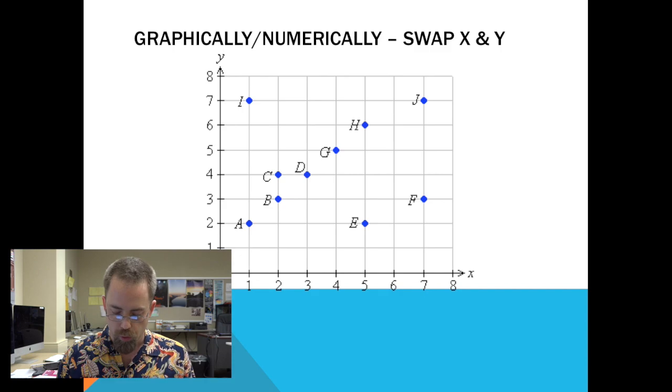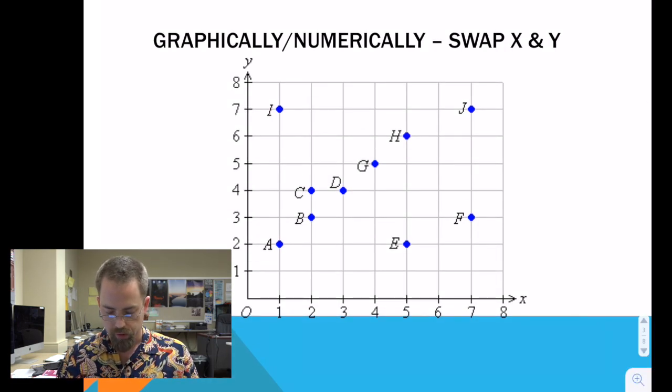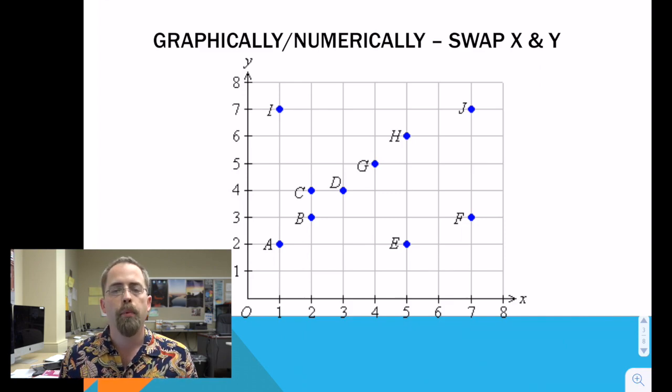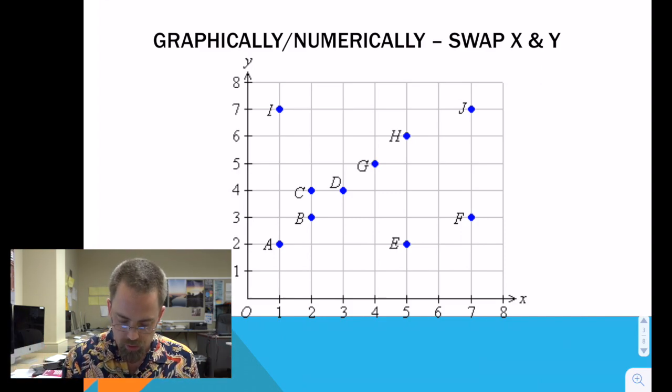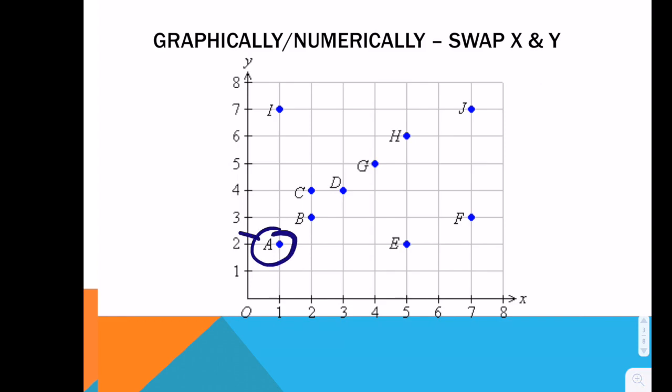If we look at this set of points, we've got a bunch of letters, a through j in the first quadrant, giving us a bunch of points. Inverses is when you swap x and y. So, if we look at this point a, we can see that a is over there at 1, 2. So, the inverse of a is going to be at 2, 1. And then look at b. It's at 2, 3. So, at 3, 2, we're going to have the inverse of b. I see that e is at 5, 2. So, at 2, 5, I will have the inverse of e.